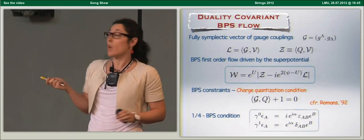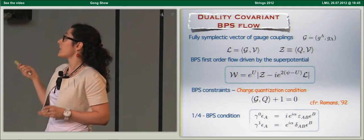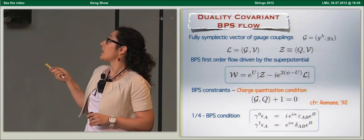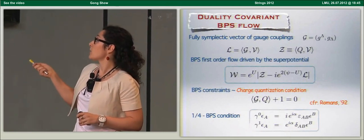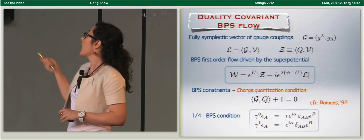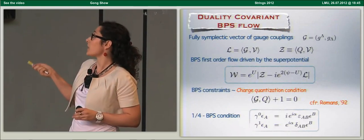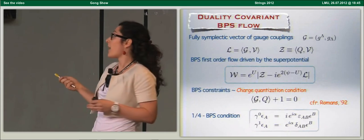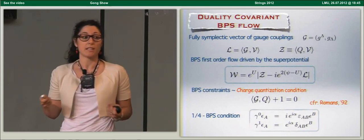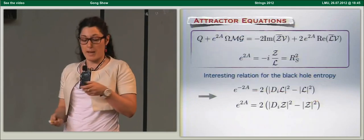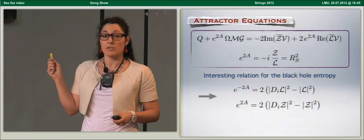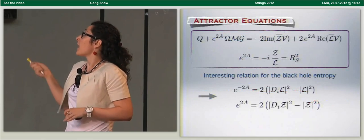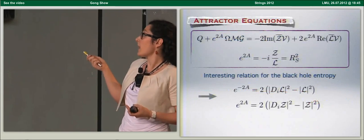An important role in deriving the BPS flow is played by a quantity constructed as the central charge but using gauging charges instead of black hole charges. This L provides a shift in the central charge giving the superpotential. In absence of gauging, this reduces to the well-known superpotential for ungauged supergravity. What has no analogue in the ungauged limit is a charge quantization condition equivalent to what Romans found for the supersymmetric monopole solution. We also have to impose a double projection condition on Killing spinors, giving a one-quarter BPS solution. The critical points of the superpotential give the attractor equations.